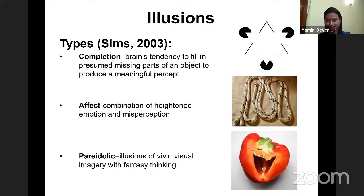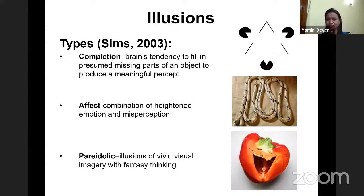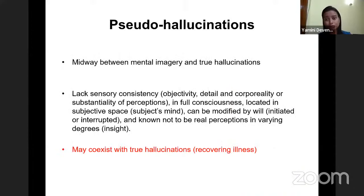Affect illusion occurs in the background of heightened emotionality. If someone is very fearful and sees the second stimulus shown on screen, it's quite obvious they will guess it's a snake rather than a rope — that's affect illusion. Paradoxical illusions involve individuals with fantastic thinking, who can make meaning of percepts in a more fantastical, vivid visual manner — almost like what happens in the third diagram, which is just a cut section of capsicum, but it almost looks like a laughing face.